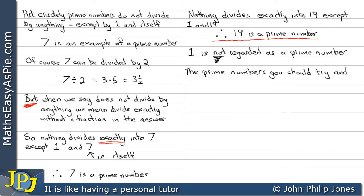The prime numbers you should try and remember are 2, 3, 5, 7, 11, 13, 17 and 19.